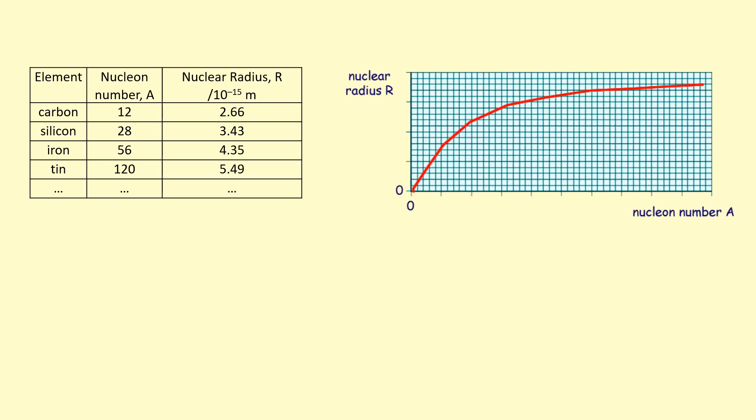If I plot a graph of nuclear radius against nuclear number, you get this relationship here. I can't quite tell what the relationship is by just looking at the graph, but it's going to look something like this.